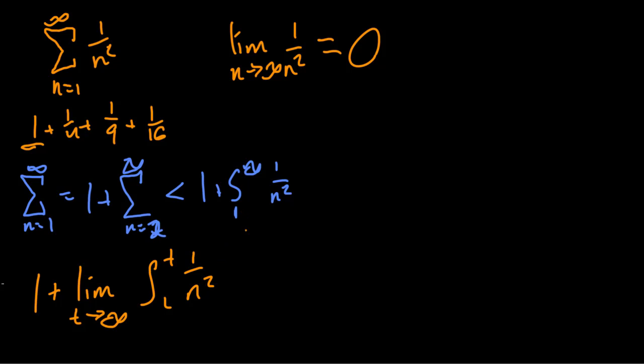Now 1 over n squared is n to the negative 2. So we're doing our reverse power rule. So what we're going to do, we're going to raise the power by 1 and then divide by that new power. So n to the negative 2, raising it by 1 becomes n to the negative 1, and dividing by that becomes negative n to the negative 1. So here's what we'll get. We'll get 1 plus the limit as t approaches infinity of, what did I just say, of negative 1 over n. Okay. And yeah, just like that. Perfect.